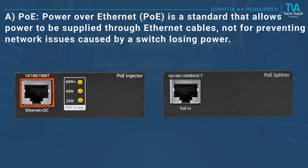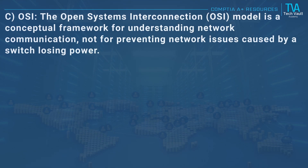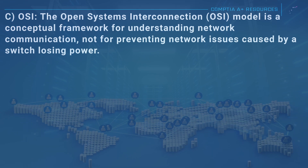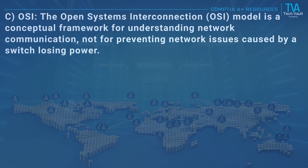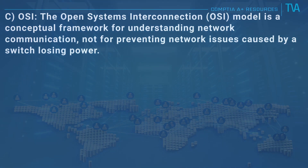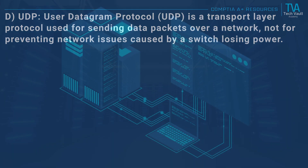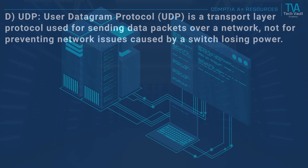A, PoE: Power over Ethernet is a standard that allows power to be supplied through Ethernet cables, not for preventing network issues caused by a switch losing power. C, OSI: the Open Systems Interconnection model is a conceptual framework for understanding network communication, not for preventing network issues. D, UDP: User Datagram Protocol is a transport layer protocol used for sending data packets over a network, not for preventing network issues caused by a switch losing power.